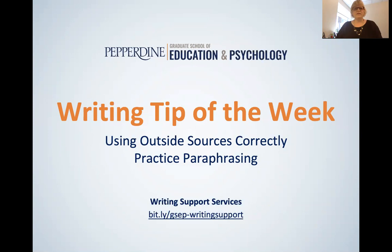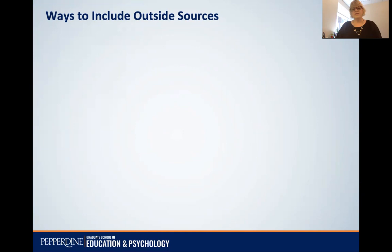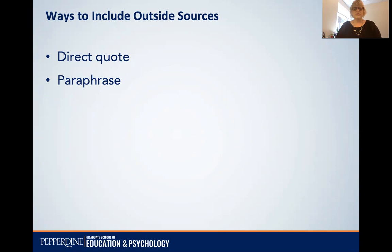There are three ways to include outside sources. You can use a direct quote where you use the verbatim text from an author, use quotation marks around it, and then add your citation. You can use a paraphrase, which is about the same amount of material as the original but in your own words with the same idea and a citation. Or you can do a summary, which is just like a paraphrase except the original is longer and the summary is much shorter.